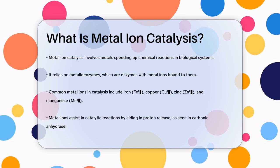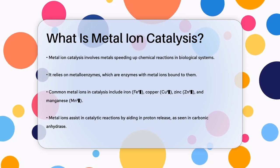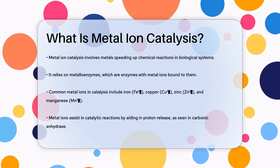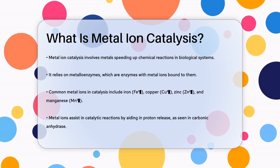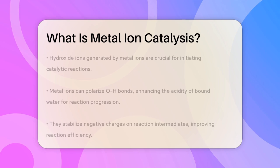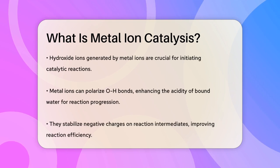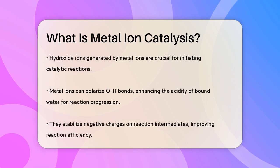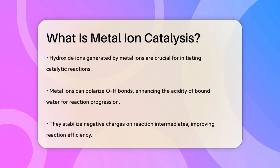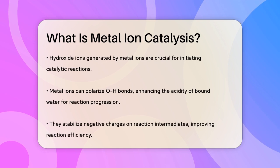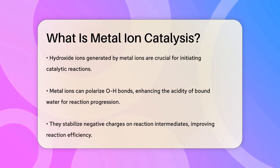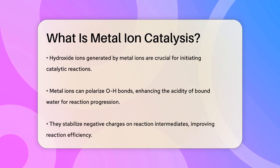Here's how it works. These metal ions can assist in the catalytic reaction in several ways. For instance, in the case of the enzyme carbonic anhydrase, the metal ion helps to release a proton from a bound water molecule, creating a nucleophilic hydroxide ion. This hydroxide ion is crucial for starting the catalytic reaction. The metal ion also polarizes the OH bond, making the bound water more acidic, which is essential for the reaction to proceed.